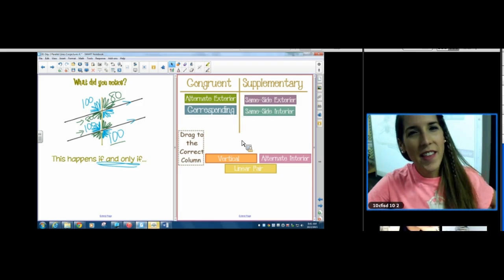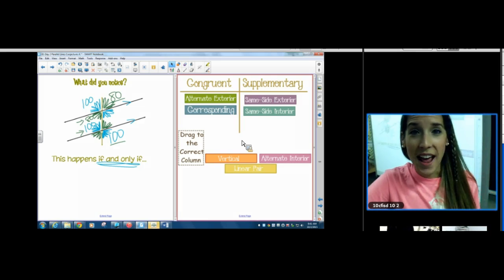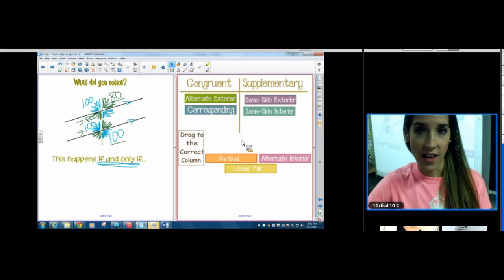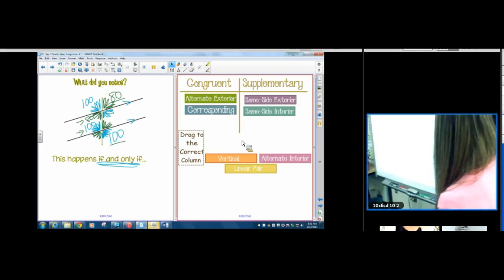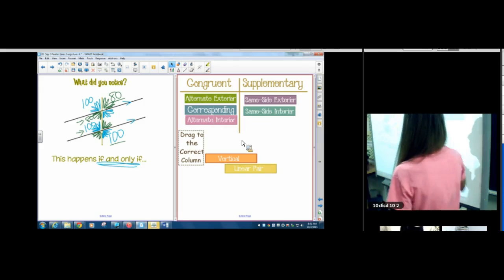What about same side interior? So like this 100 right here and this 80 right here, these two are same side interior. They're not congruent there. Supplementary. Do you see a pattern there in the supplementary column? Everything in that column starts with an S. Supplementary, same side interior, same side exterior. They all start with an S. That's good news! Okay. Alternate interior. Look at the picture. Green, green. Blue, blue. They match. Congruent.